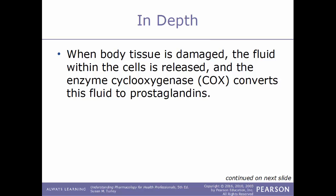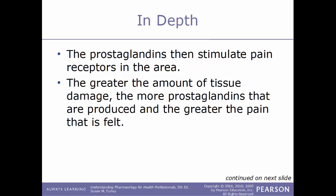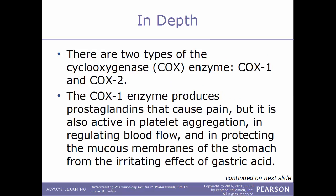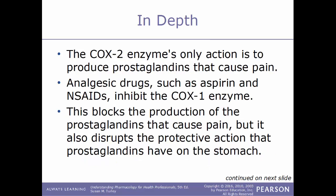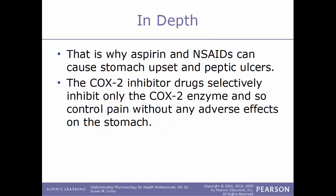When body tissue gets damaged, the fluid within the cells gets released along with the cell contents, and the enzyme cyclooxygenase — or COX — converts this fluid to prostaglandins. The prostaglandins then stimulate pain receptors in the area; the greater the tissue damage, the more prostaglandins produced and the greater the pain felt. There are two forms of cyclooxygenase: COX-1 and COX-2. The COX-1 enzyme produces prostaglandins that cause pain but is also active in platelet aggregation, regulating blood flow, and protecting the mucous membranes of the stomach from gastric acid. COX-2's only action is to produce prostaglandins that cause pain. Aspirin and NSAIDs inhibit the COX-1 enzyme, which blocks pain but also disrupts the protective action prostaglandins have on the stomach — this is why aspirin and NSAIDs can cause stomach upset or peptic ulcers.